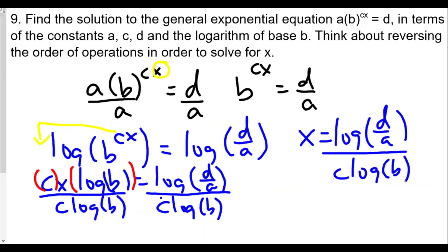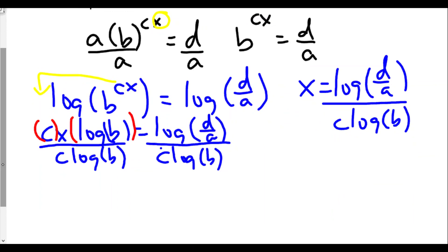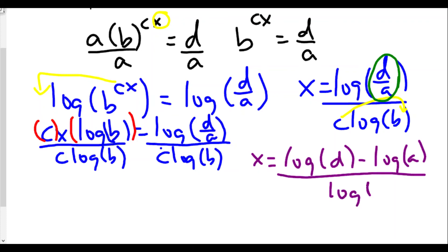Now the interesting part is we can expand some of these things and put pieces together because we can use the reverse. First, we can use the reverse power rule to bring the c back as an exponent. Not only that, we've got log of d over a, which can be written as the difference of two logs. So we go even further and say x equals the log of d minus the log of a, all over the log of b raised to the c power. And this is your final answer.